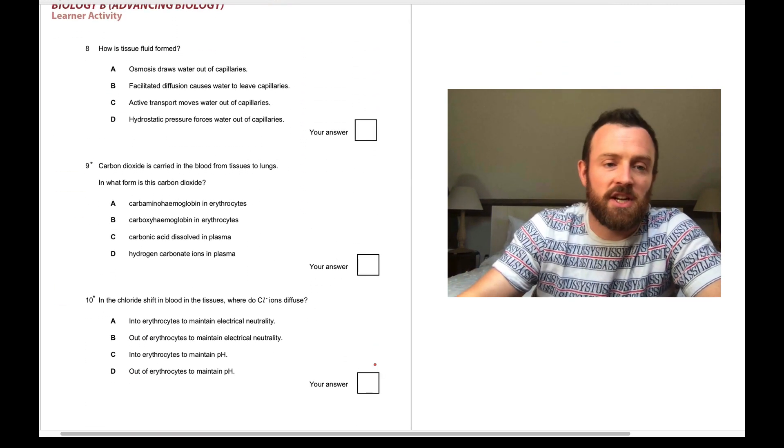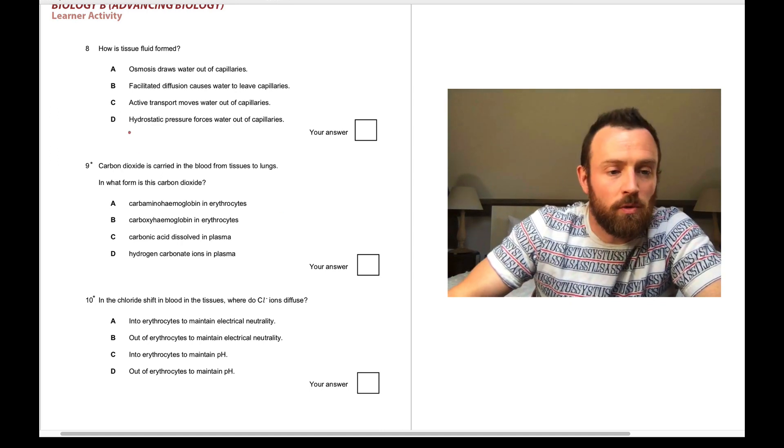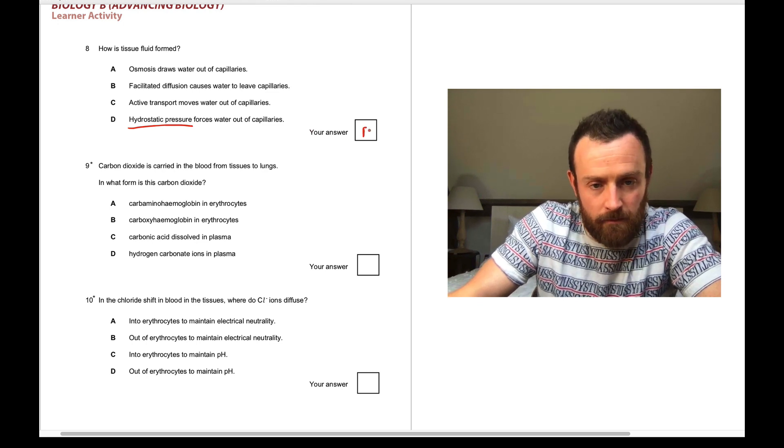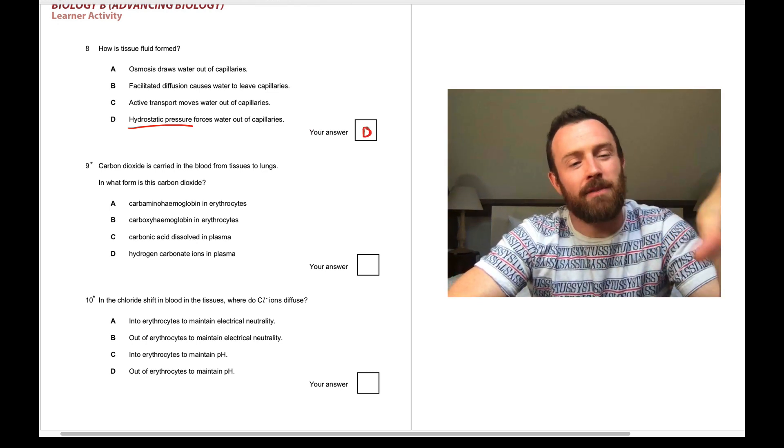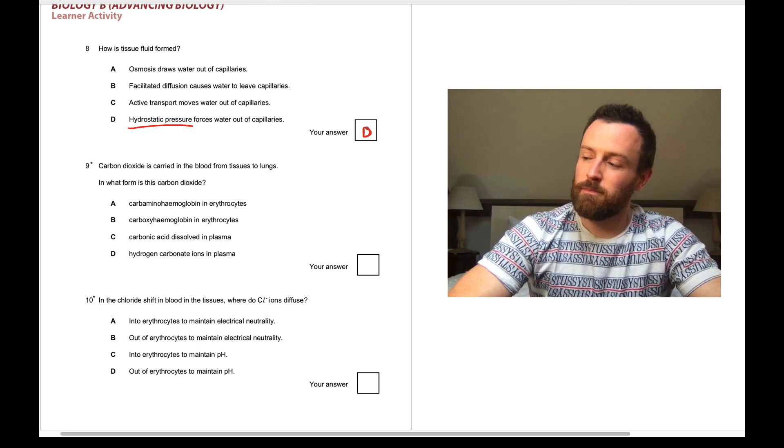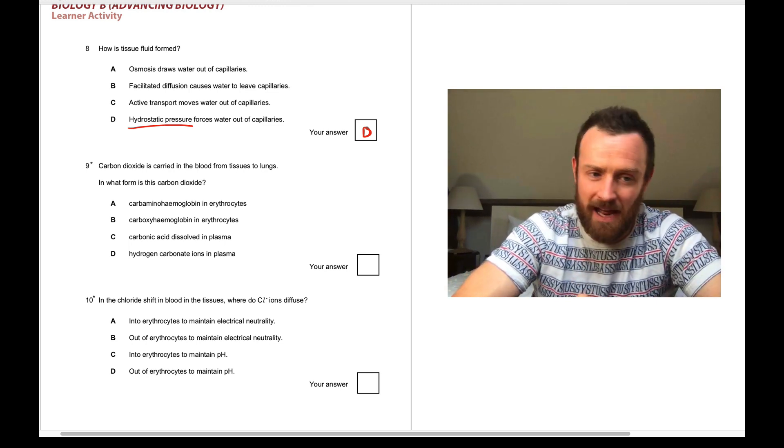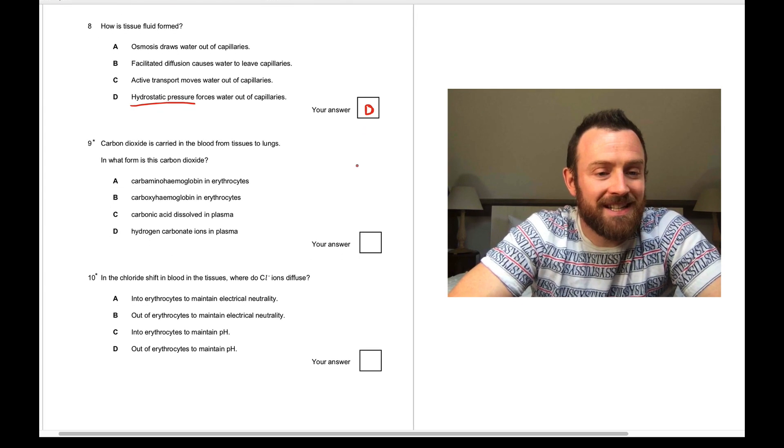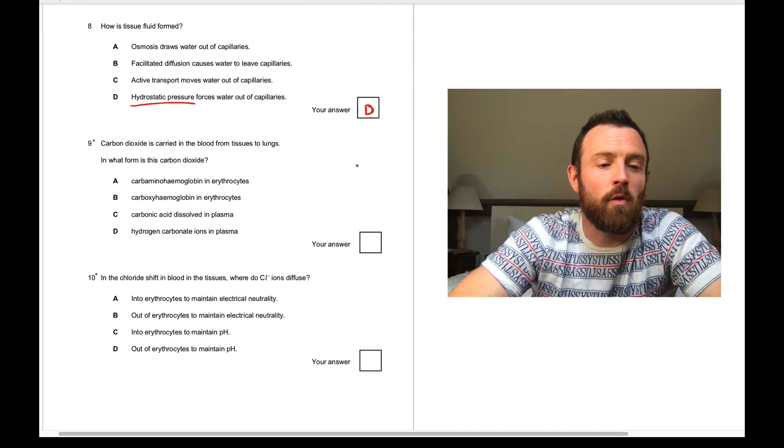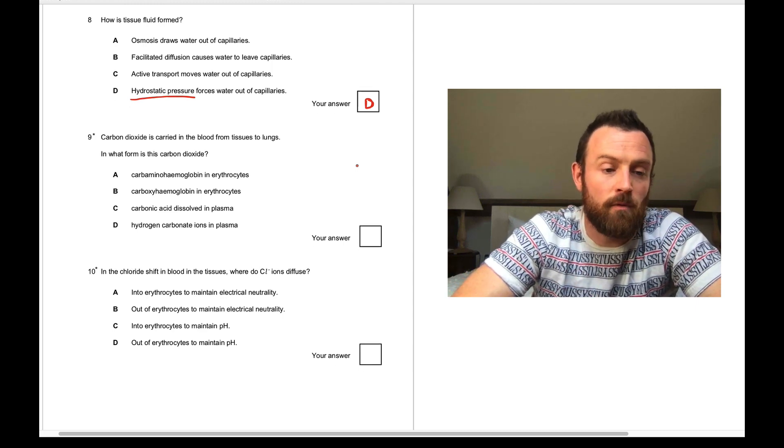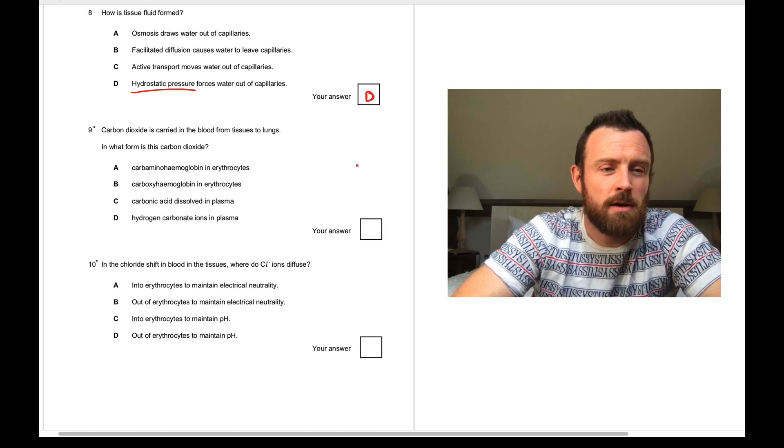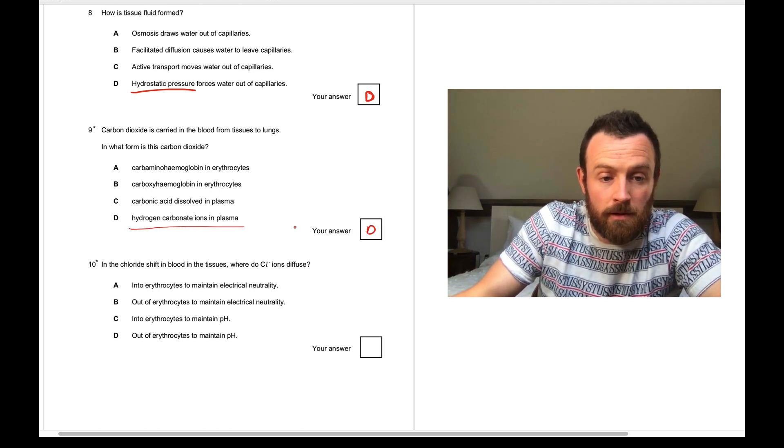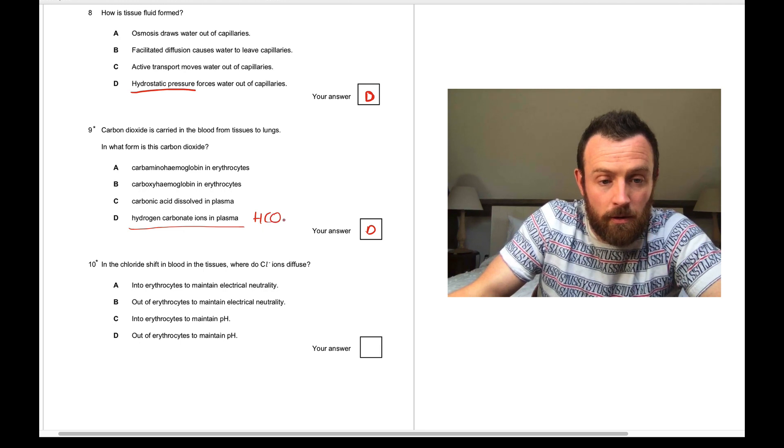Question eight. How is tissue fluid formed? Well, tissue fluid is formed due to hydrostatic pressure. So we have hydrostatic pressure forces out at the beginning and then we have oncotic pressure that pulls most of it back in at the end of the capillary. Question nine. Carbon dioxide is carried in the blood from tissues to the lungs. What form is most of this carbon dioxide? Most of it is as hydrogen carbonate ions in the plasma D, HCO3 minus.